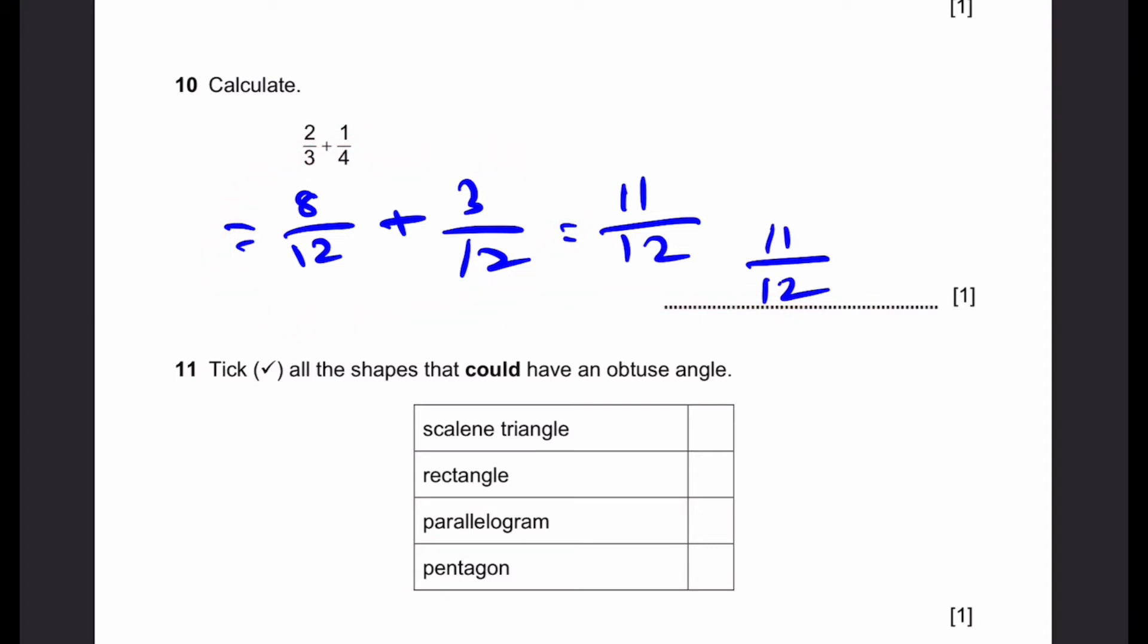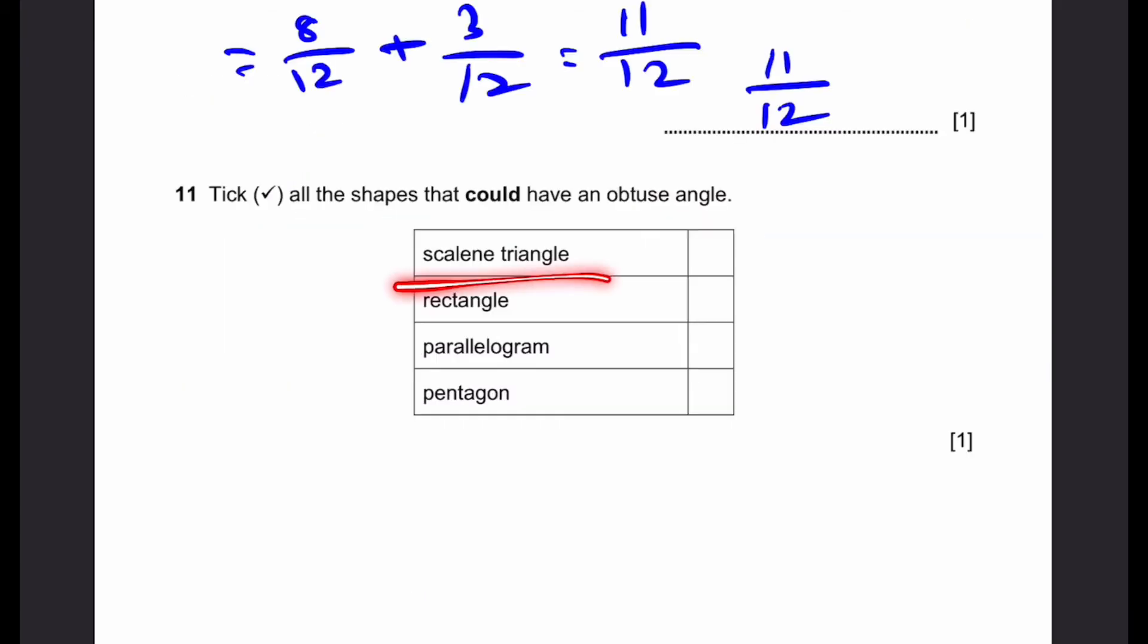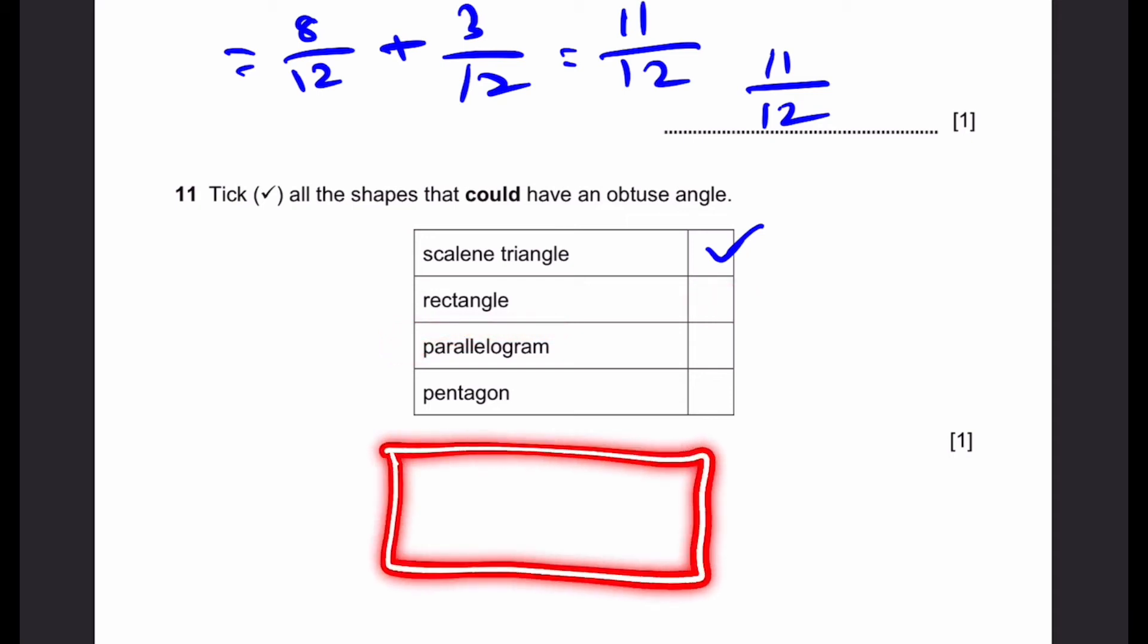Question 11. Tick all the shapes that could have an obtuse angle. Notice that they have bolded 'could'. So it does not have to have it, but it could have an obtuse angle, which means it's not 100% in every one of that shape. Scalene triangle: yes, it could have, because I'll give you an example. This is a scalene triangle. None of the sides have the same length. None of the angles are the same. This is obtuse. So it could have an obtuse angle. Rectangle: this is a no, because rectangles always have 90 degree angles, and 4 of them, and 90 degrees is not obtuse.